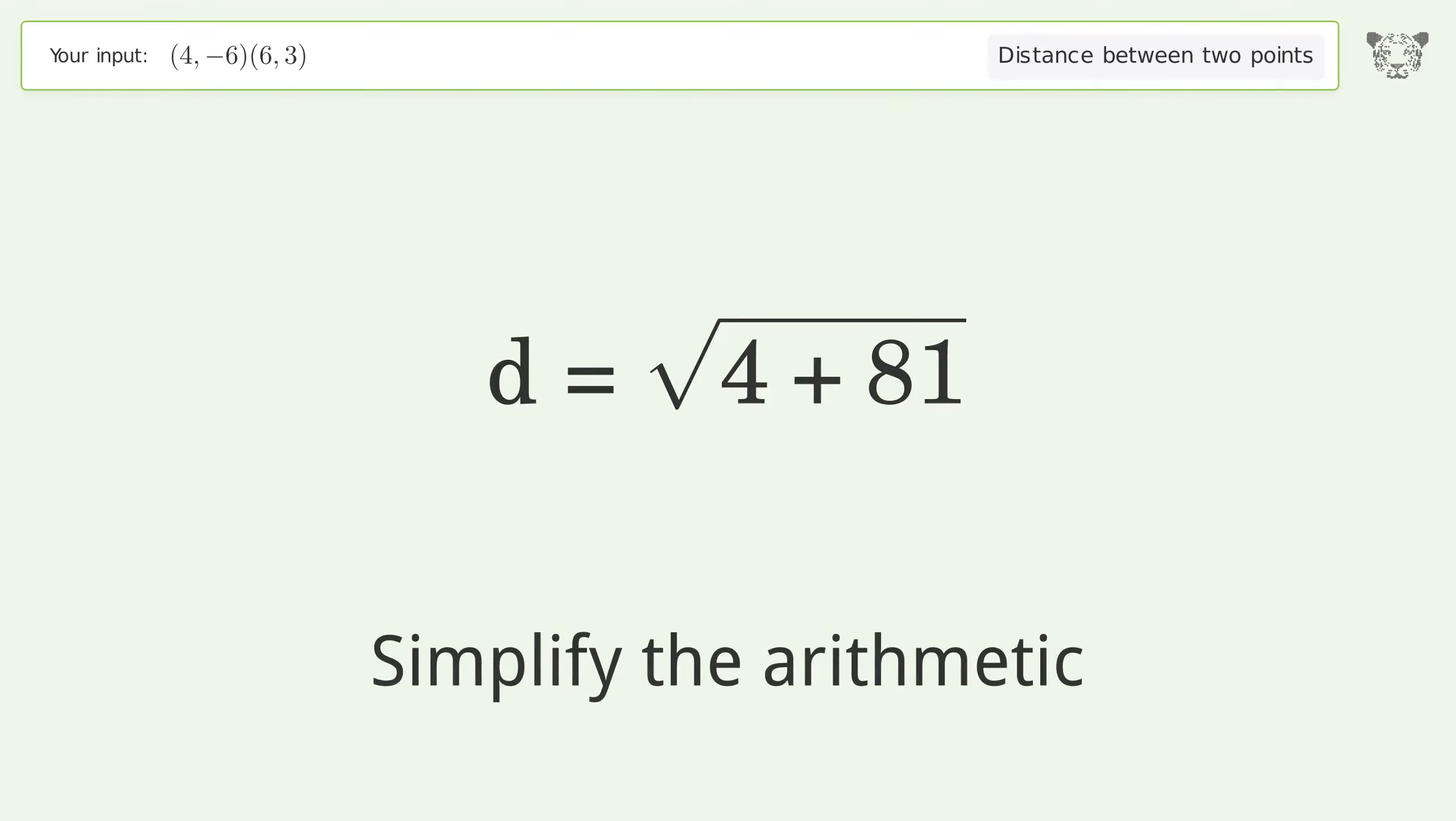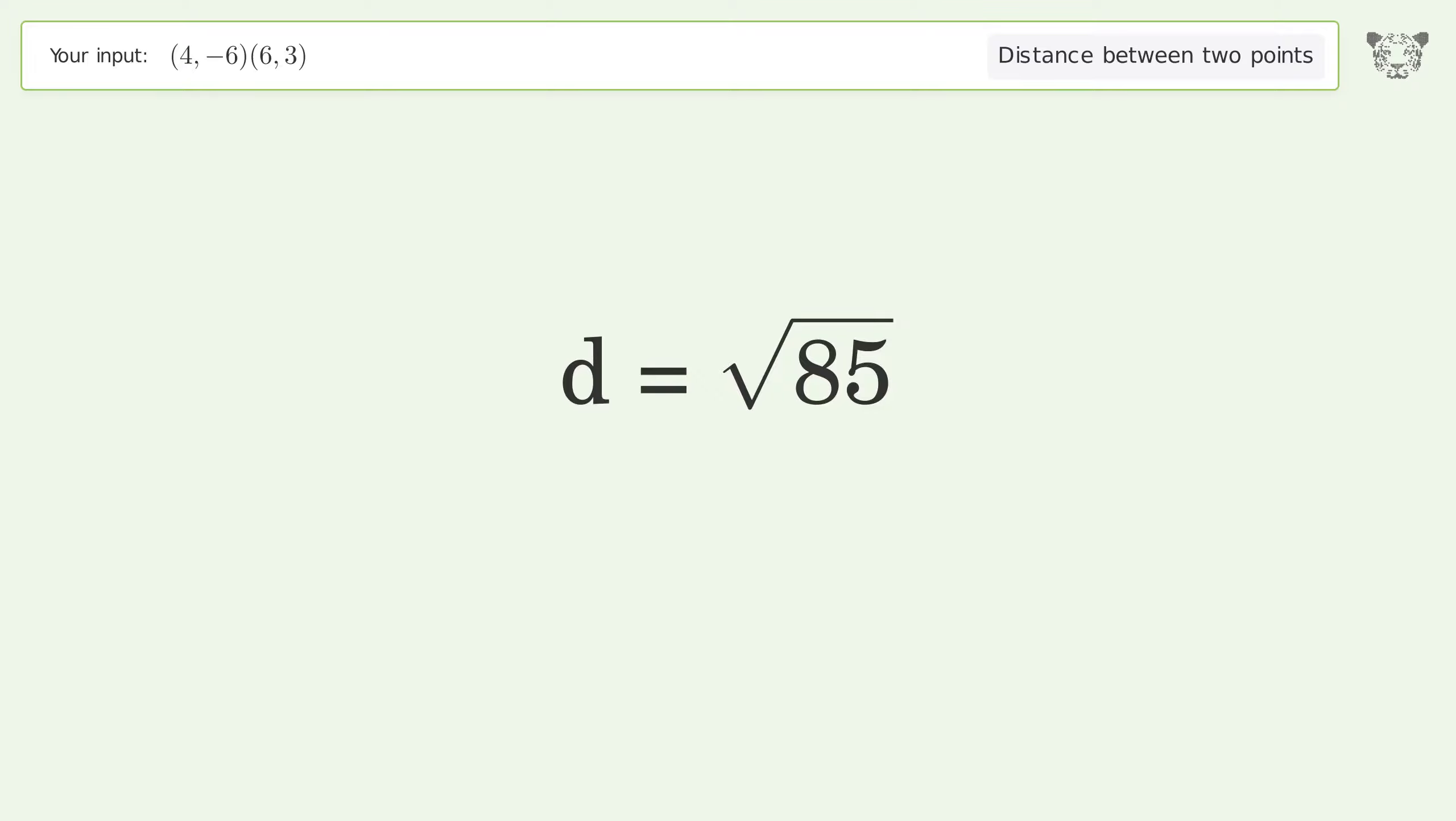Simplify the arithmetic. And so the distance between the two points is the square root of 85, or 9.22.